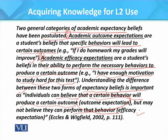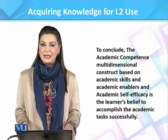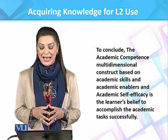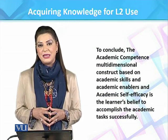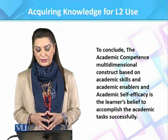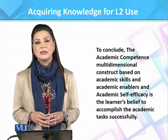Understanding the difference between these two forms of expectancy belief is important, as individuals can believe that a certain behaviour will produce a certain outcome — that is outcome expectation — but may not believe they can perform that behaviour, which is efficacy expectation. To conclude, academic competence is a multi-dimensional construct based on academic skills and academic enablers, and academic self-efficacy is the learner's belief to accomplish the academic task successfully.